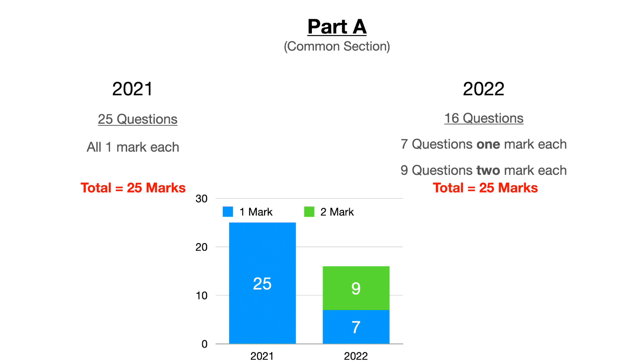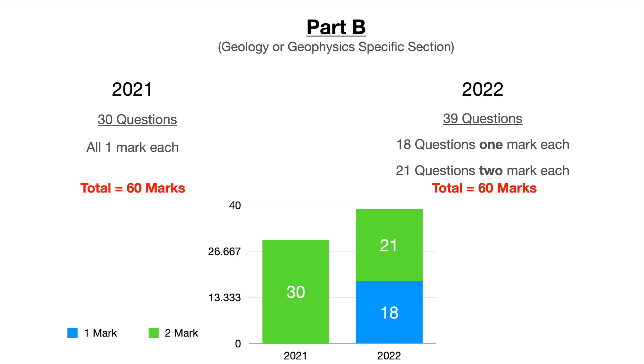Now let's discuss what actually has changed. The total number of questions in part A has come down from 25 to 16, and the total number of questions in section B has gone up from 30 to 39. You may think the total weightage for section A and section B has changed — that is not the case. The total weightage is still the same: section A has 25 marks and section B has 60 marks. Nothing has changed in that respect.